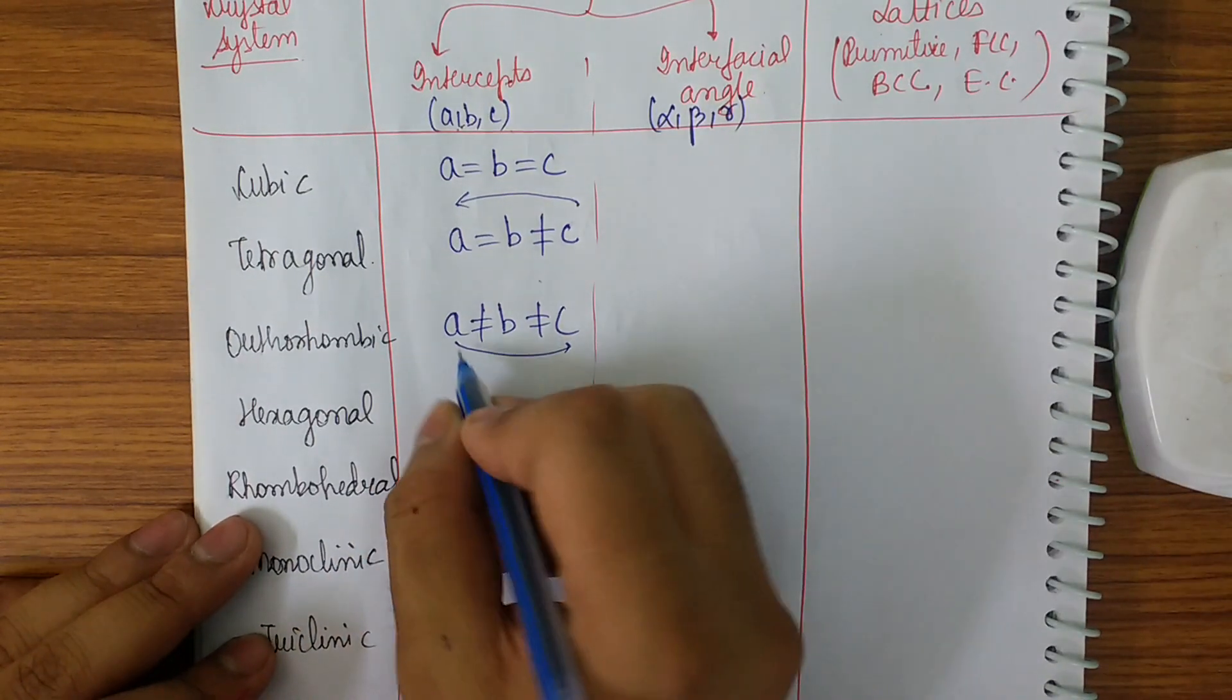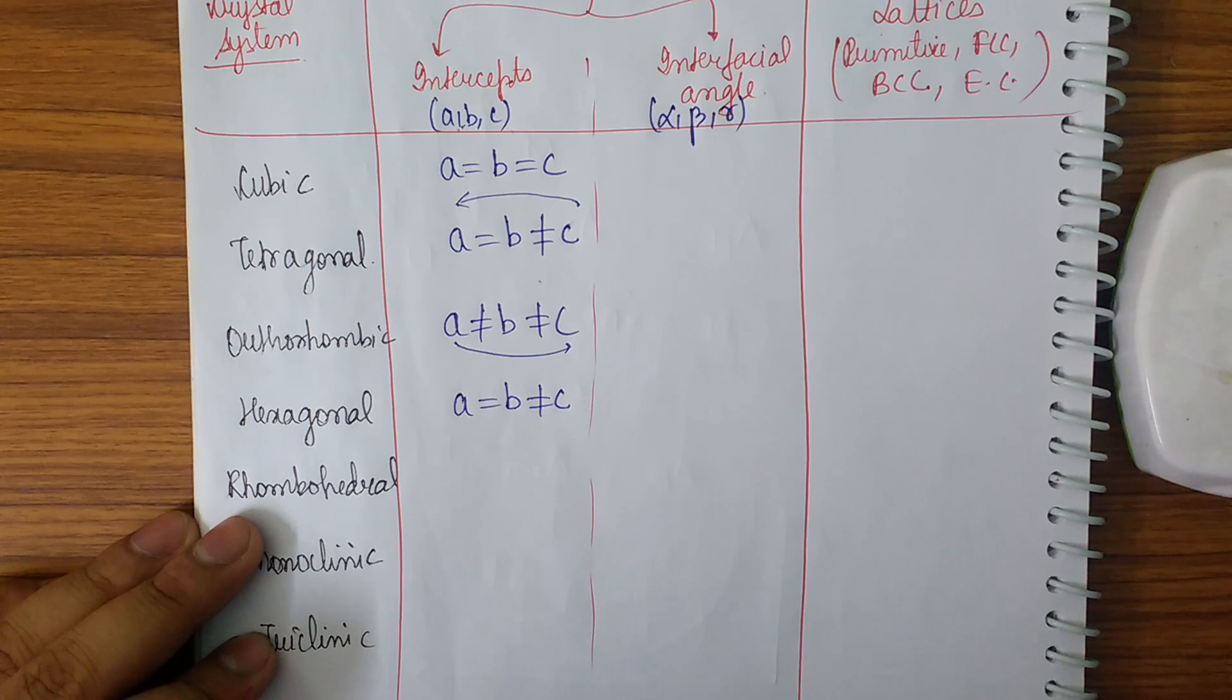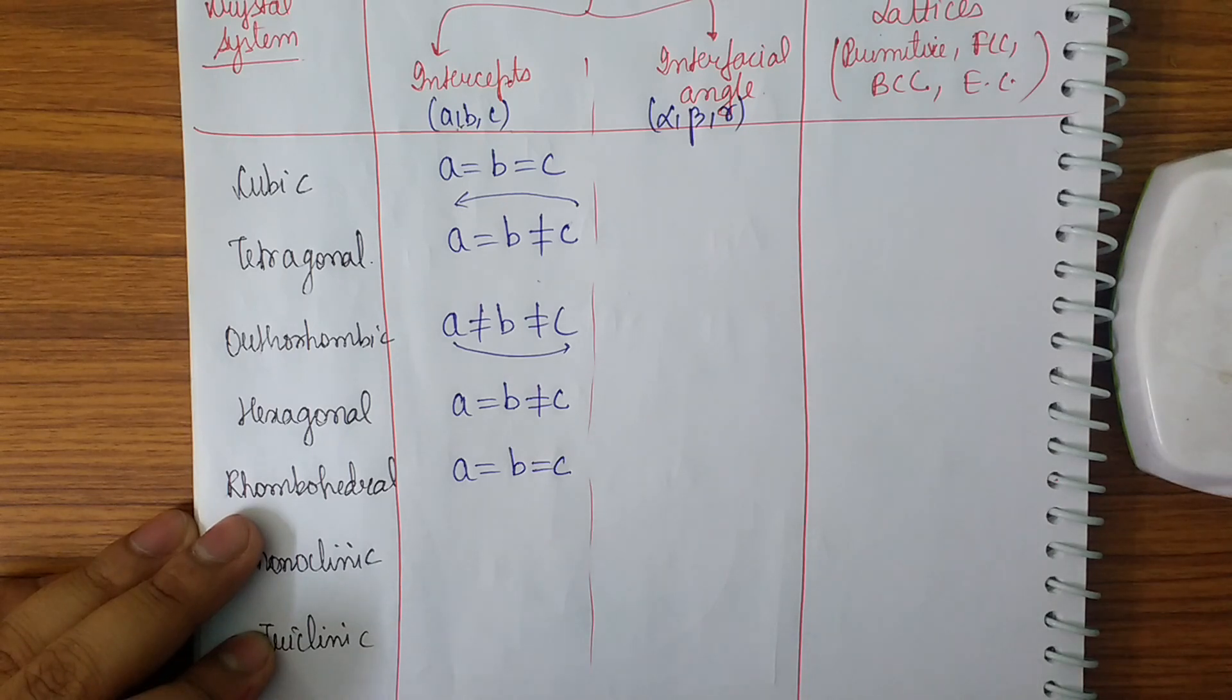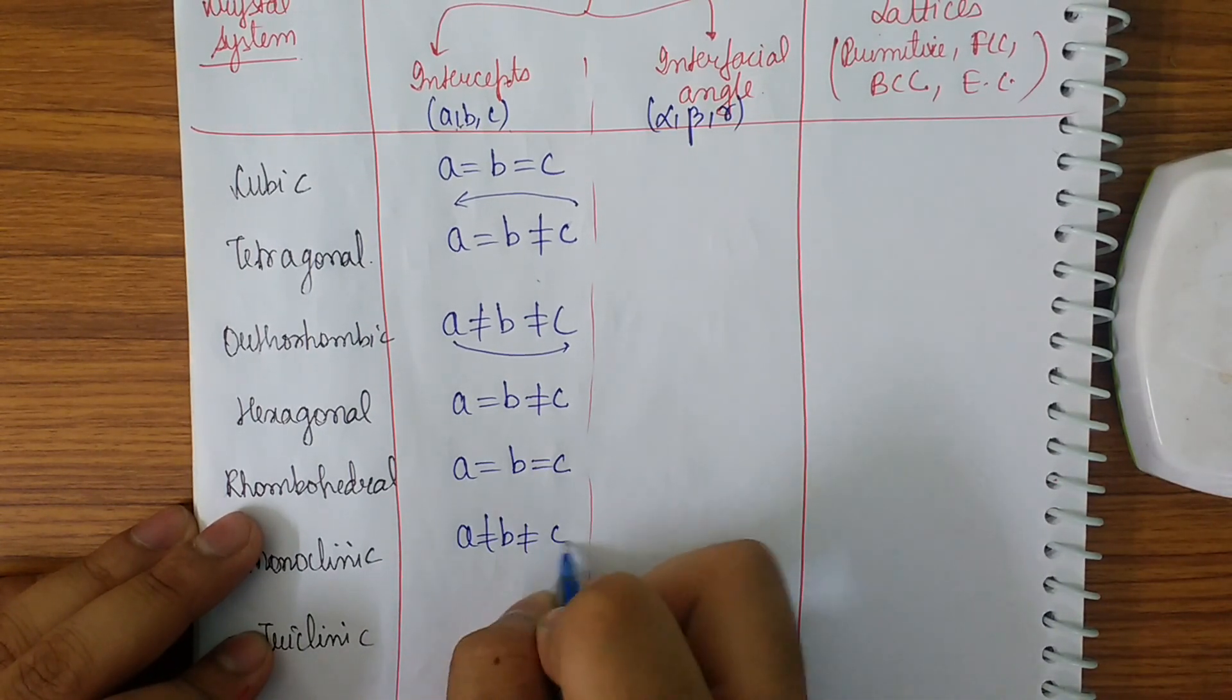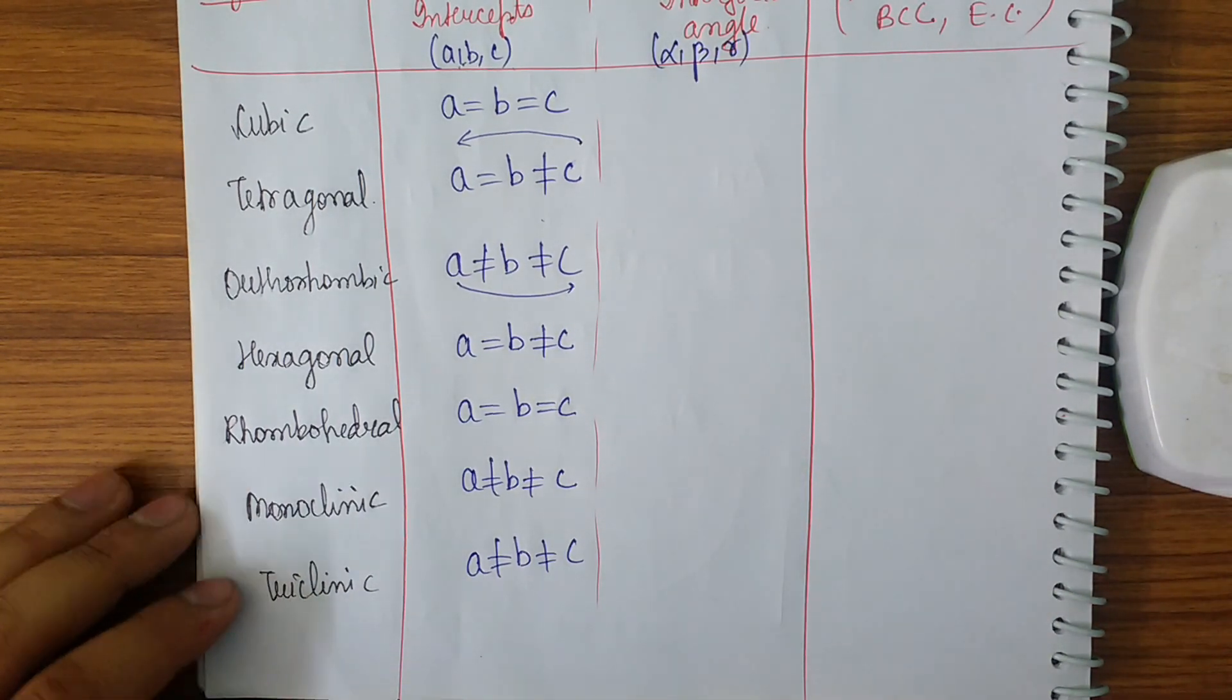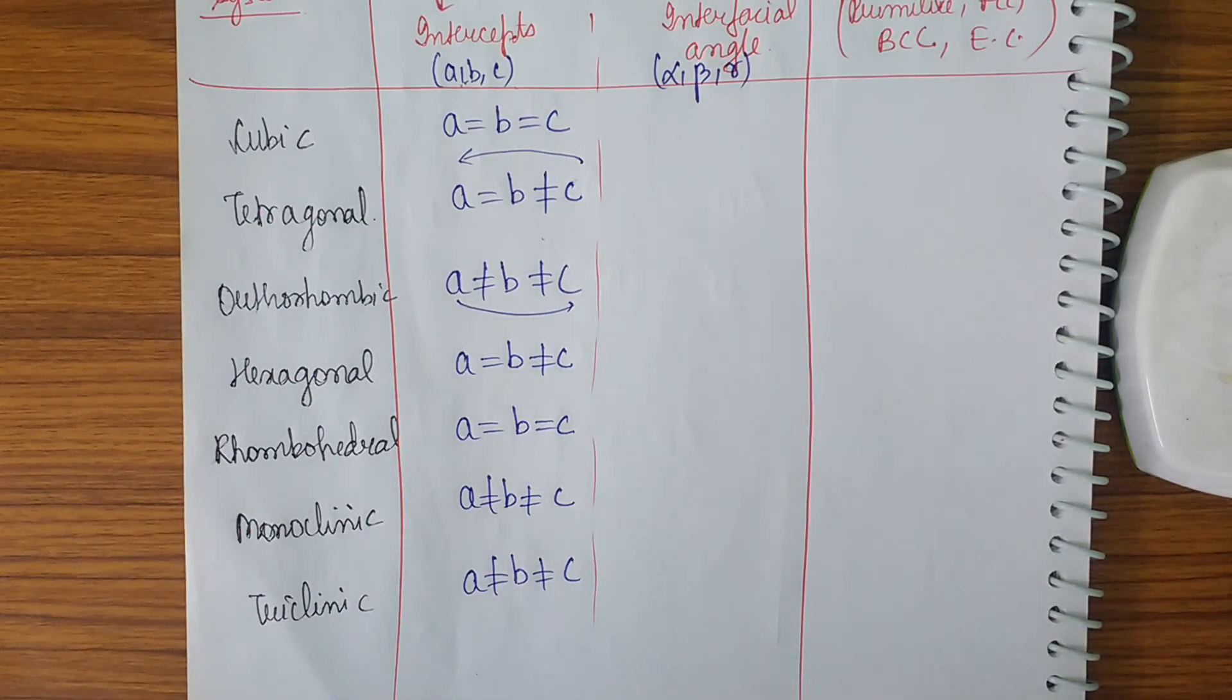Now what to do next? Remove the first equal sign from this place. So it will be a is equal to b not equal to c. Now what will be the next one? That is a is equal to b is equal to c. The next one will be a not equal to b not equal to c. And the next one will also be a not equal to b not equal to c. In the last two cases we get the values as not equal.